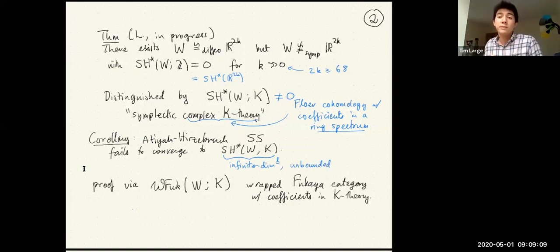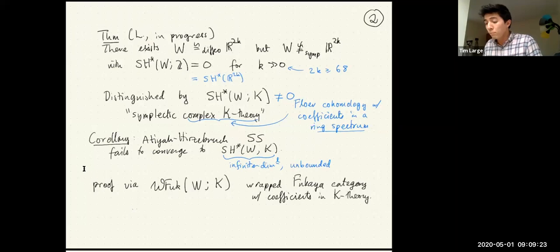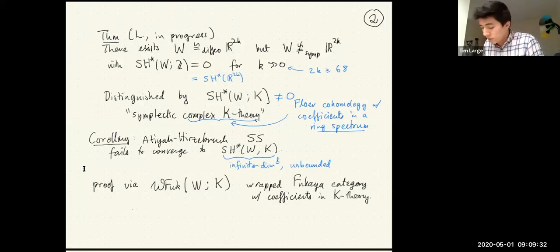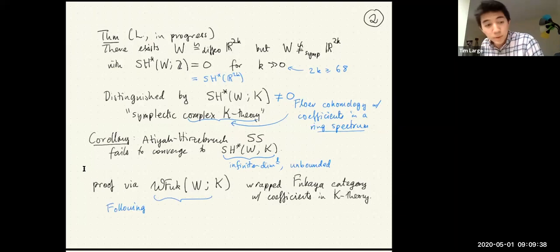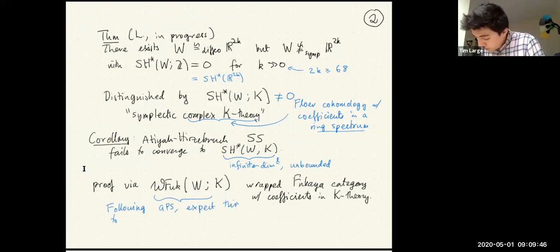If you study symplectic cohomology with coefficients in K-theory, you can't understand it perturbatively by first knowing the integer-valued version and then using a spectral sequence. The way we prove this result is by going via wrapped Fukaya categories. Following ideas from Sylvan, Ganatra, Pardon, and Shende, we expect these wrapped Fukaya categories to be the localization of a finite-dimensional category.